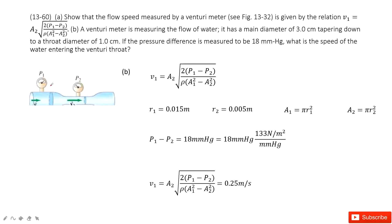First one is r1. This is the main diameter, so you can get the radius r1, half of 3 cm. r2, half of 1 cm. And a1 equals πr1², a2 is πr2². Now the pressure difference is also given, 18 mmHg, so you can convert it to the unit Pascal.